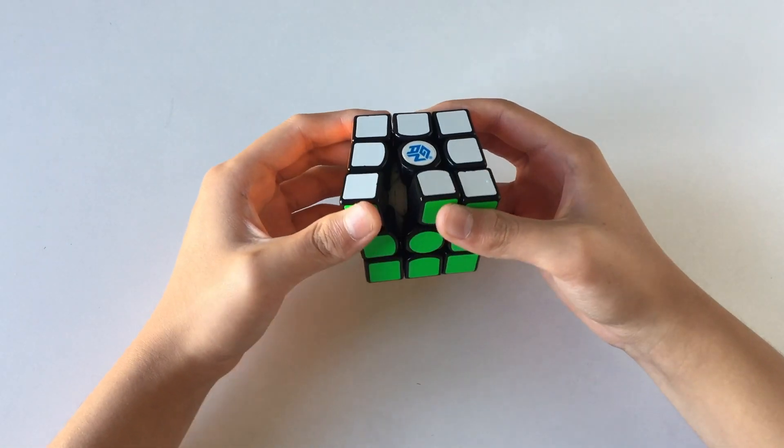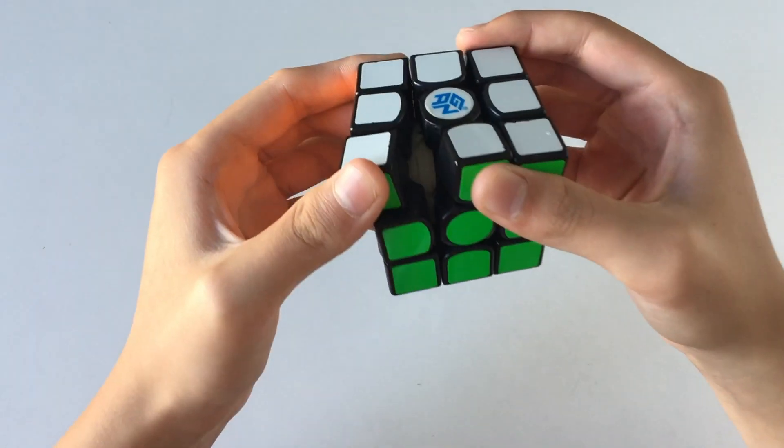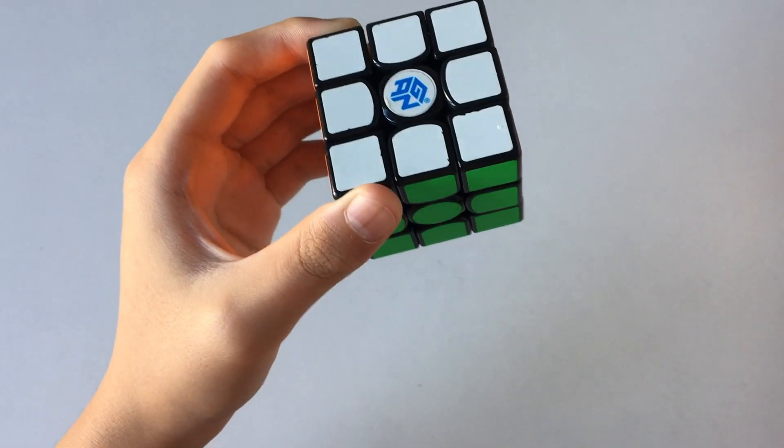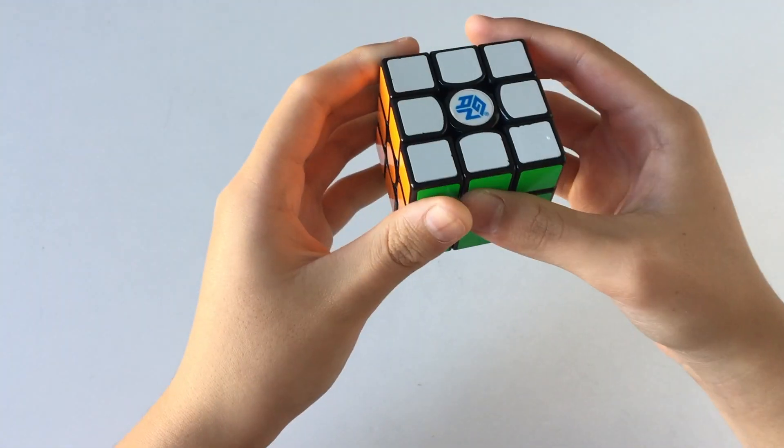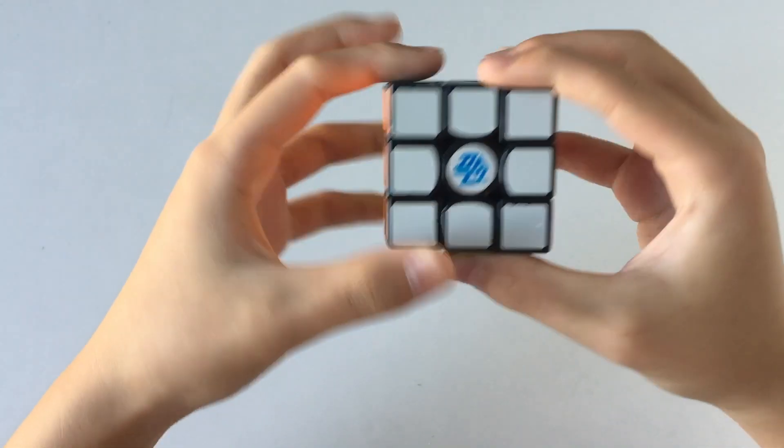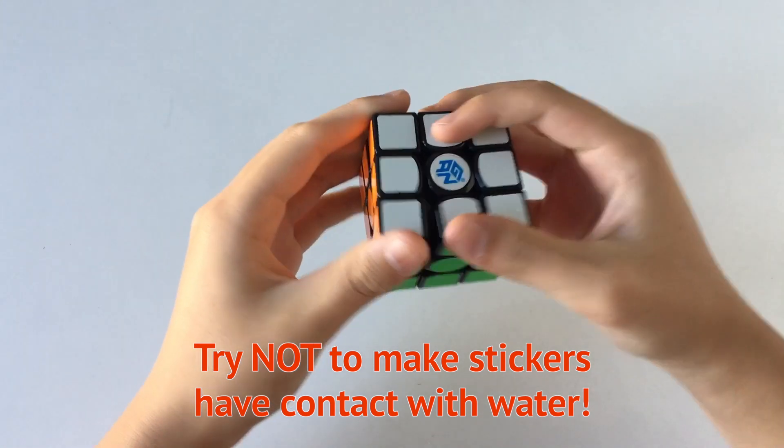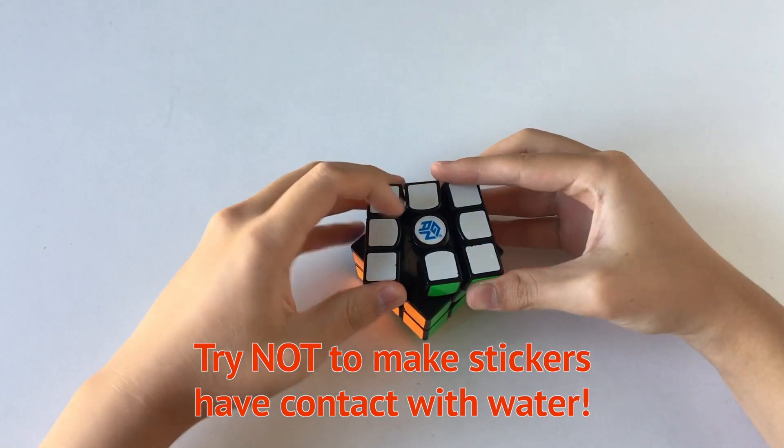Usually I will be putting all the pieces inside a cup and then fill it up with water, but since this is a sticker cube I don't want all the stickers falling off. Let's just first take off all the pieces right now and I'll just have that so my desk doesn't get that dirty.